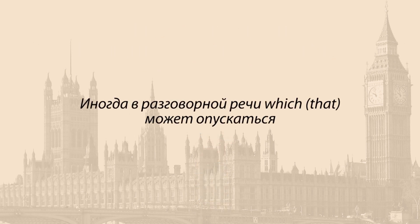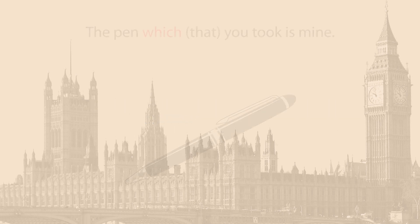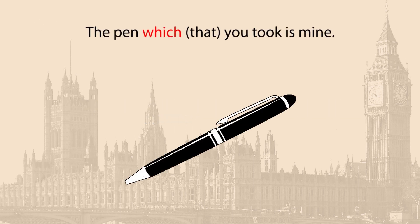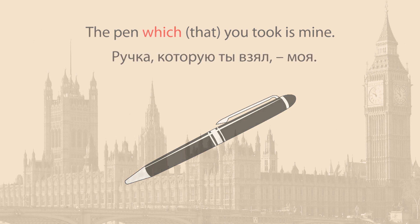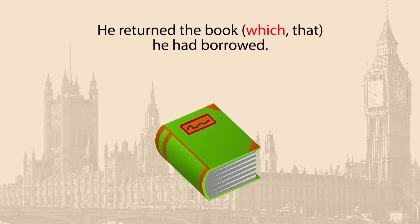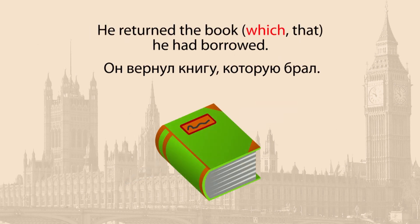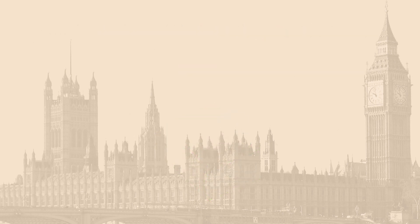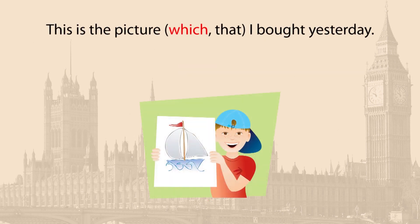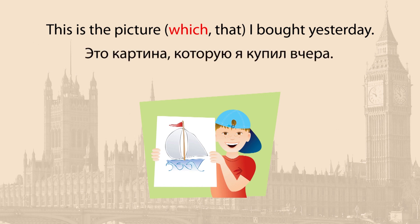Иногда в разговорной речи which/that может опускаться. For example: The pen which (that) you took is mine — Ручка, которую ты взял, моя. He returned the book he had borrowed — Он вернул книгу, которую брал. This is the picture I bought yesterday — Это картина, которую я купил вчера.